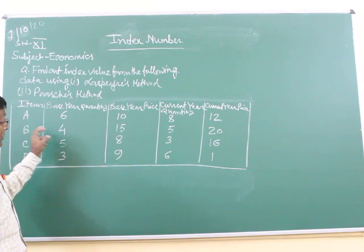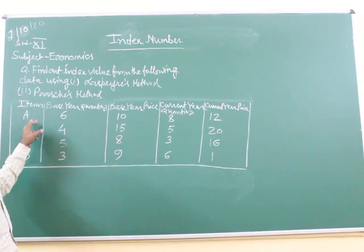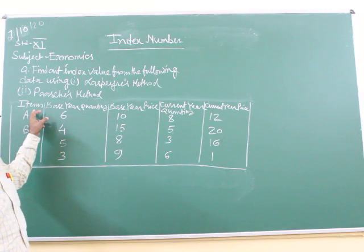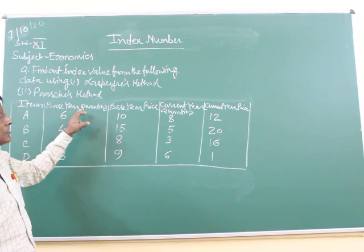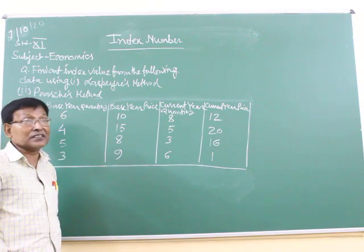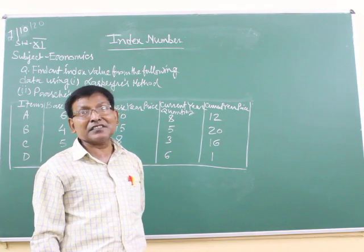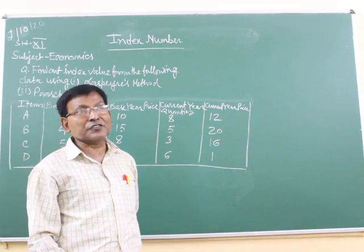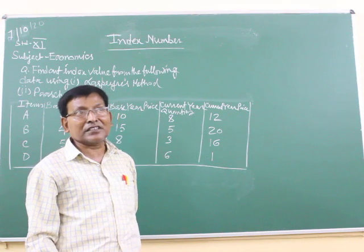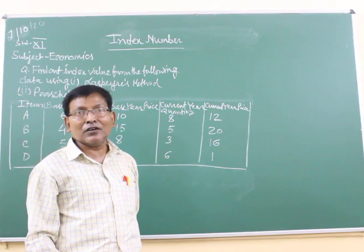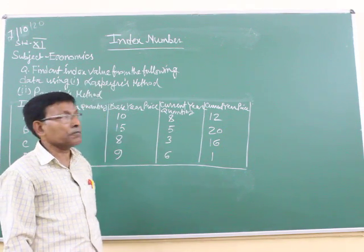What is given in the question? Five columns. First column is items A, B, C, D. This represents the nature of goods. Next one is base year quantity. We have to consider two years. One is base year. Base year is the reference year with respect to which the current year will be compared. And what is the current year? The year which is prevailing at present will be known as current year.